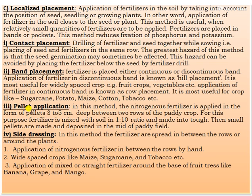The third type of localized placement is pellet application. In this method, nitrogen fertilizer is applied in the form of pellets, 3 to 5 centimeters deep between the rows of the paddy crop. The fertilizer is mixed with soil in a ratio of 1:10 and made into dough, then small pellets are made and deposited in the middle of the paddy field. The fourth type is side dressing, where fertilizers are spread between the rows or around the plants — application of nitrogen fertilizers between rows by hand for wide-spaced crops like maize, sugarcane, and tobacco, and application of mixed or straight fertilizer around the base of fruit trees like banana and grapes.